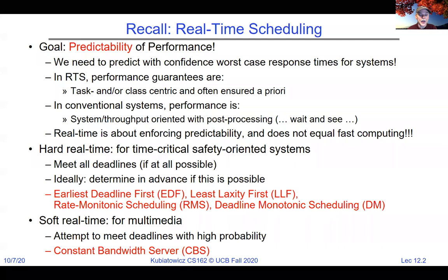We also distinguished between hard and soft real-time. Hard real-time means it's crucial to meet deadlines — you assume you don't want to miss any. Soft real-time is a situation where you want to meet deadlines with high probability, typically in something like multimedia servers. The constant bandwidth server (CBS) is a variant of earliest deadline first for multimedia, which we didn't talk about last time.